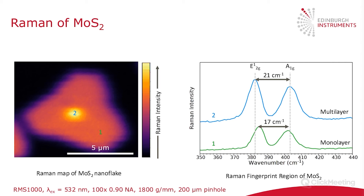What does the Raman of molybdenum sulfide look like? The Raman spectrum consists of two main bands in the fingerprint region — one at about 382 wavenumbers and one at 405 wavenumbers — corresponding to two different phonon modes in the hexagonal molybdenum sulfide lattice. By integrating the intensity of these phonon modes and scanning across the surface, you can generate a Raman intensity profile imaging the molybdenum sulfide nanoflake, which shows a characteristic triangular structure.